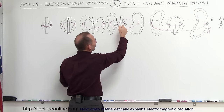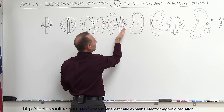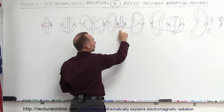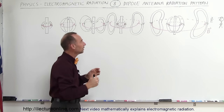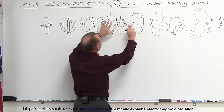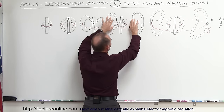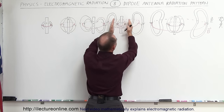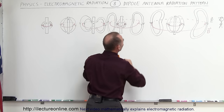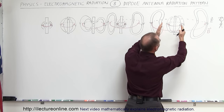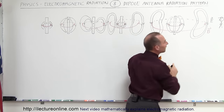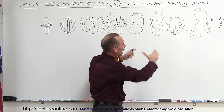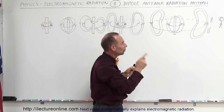As the charges change direction, a new electric field builds up around the dipole antenna, now directed upward, because the positive charges are down and the negative charges are up. The older electric field moves outward while the new electric field builds up and continues to spread. This cycle repeats over and over, with electric fields continuously building up around the antenna.